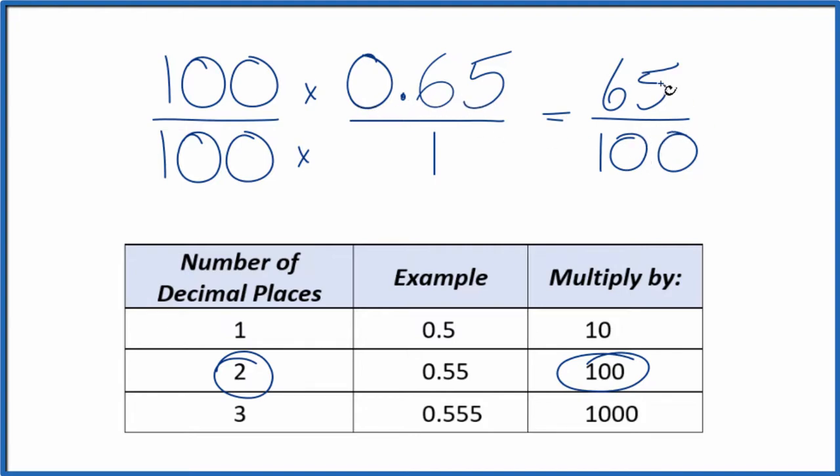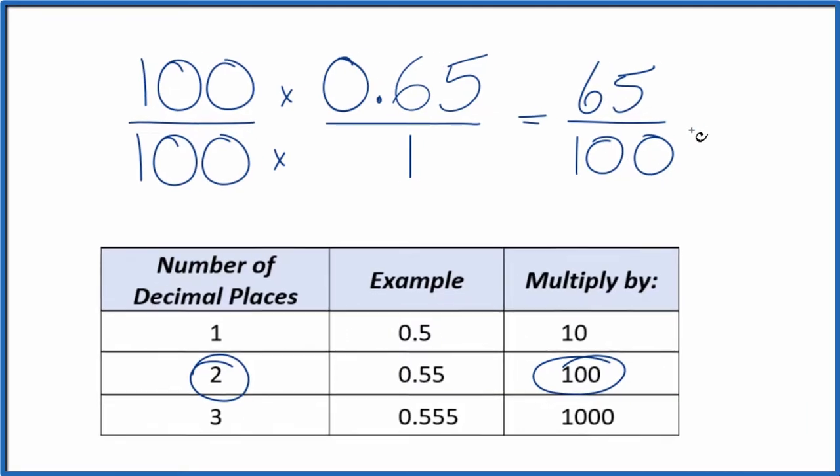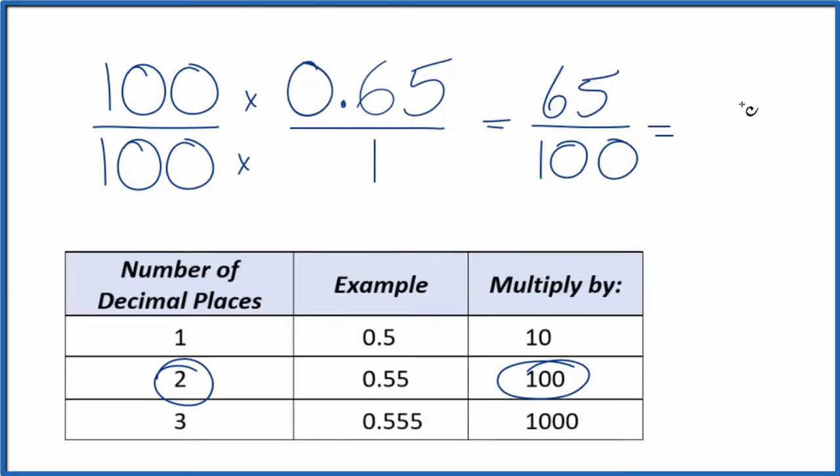But we can reduce this further and simplify it, because 5 goes into 65 and into 100. 5 goes into 65 13 times. It goes into 100 20 times. So simplest form would be 13 over 20.